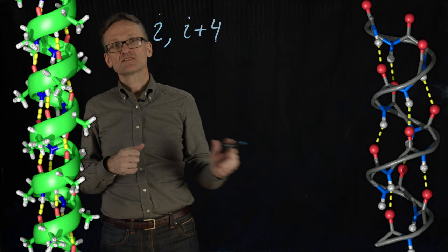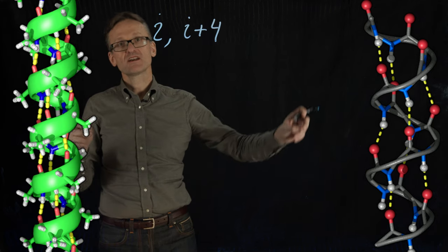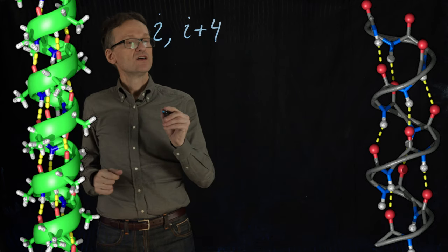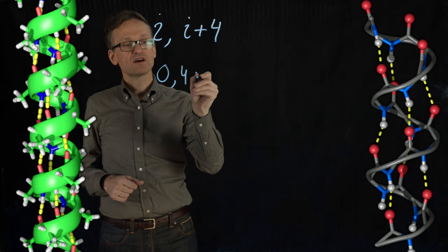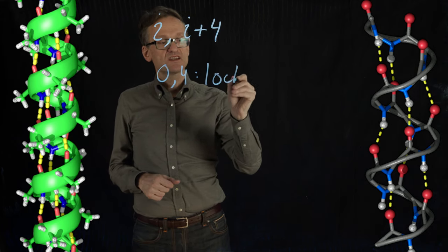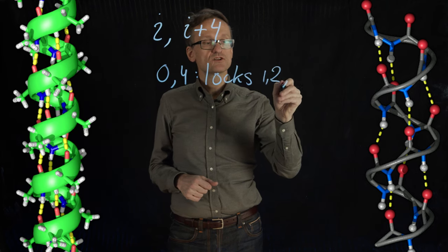And that's interesting because if you think about that, normally that amino acid polypeptide would like to be stretched out and floppy. But when you form this hydrogen bond between residues zero and four, that locks in residues one, two, and three, right?